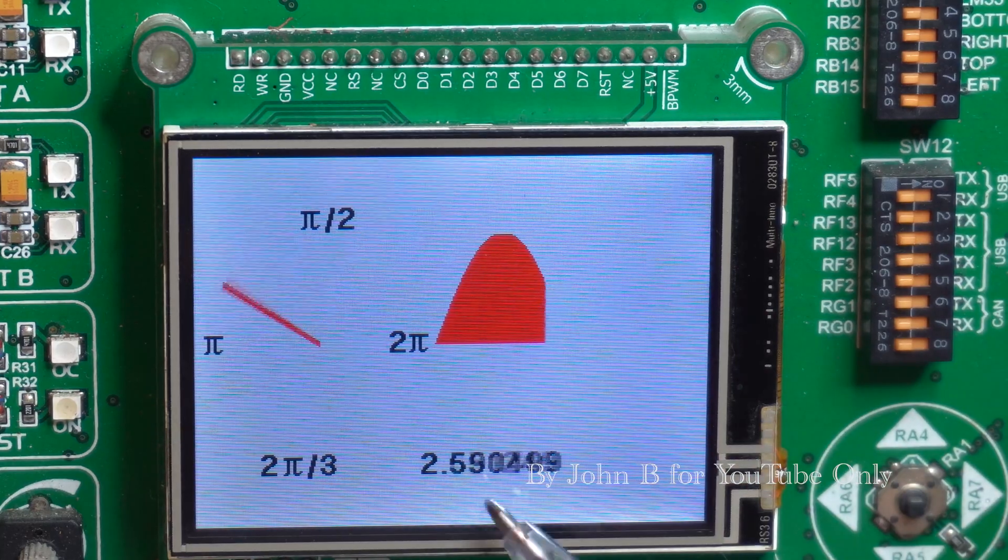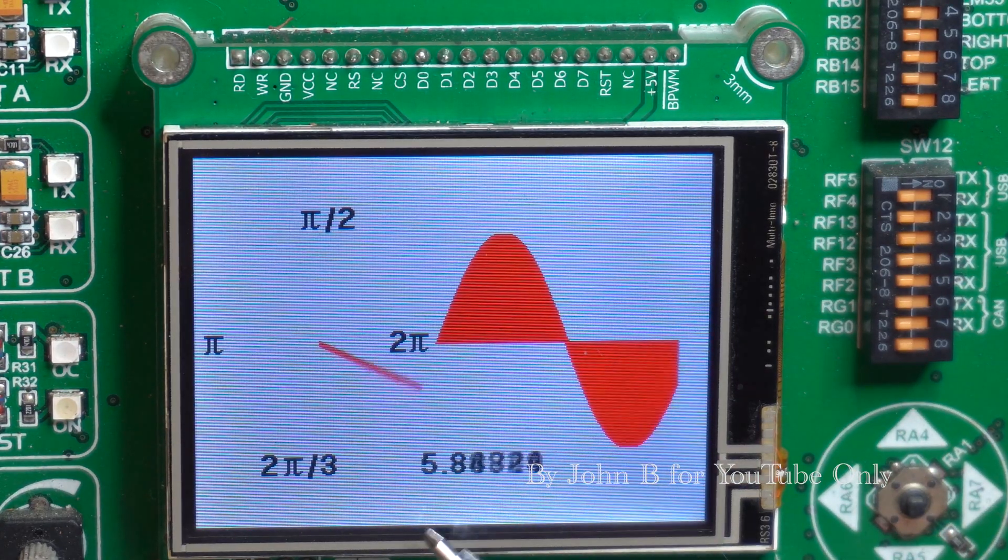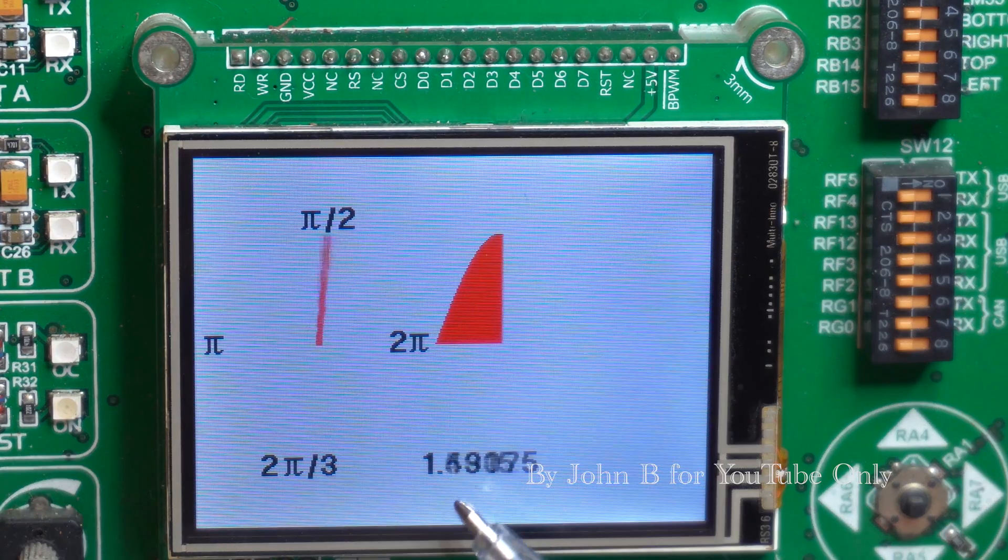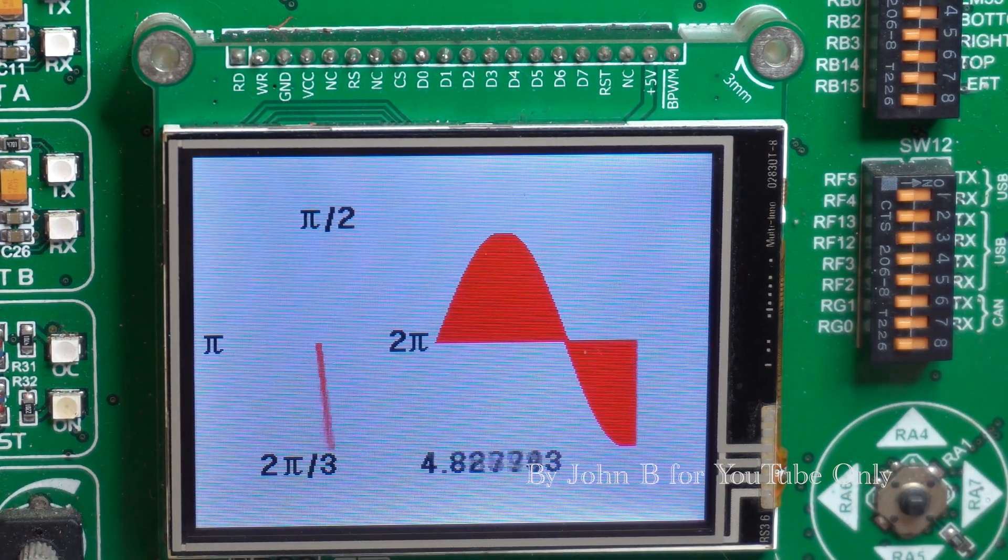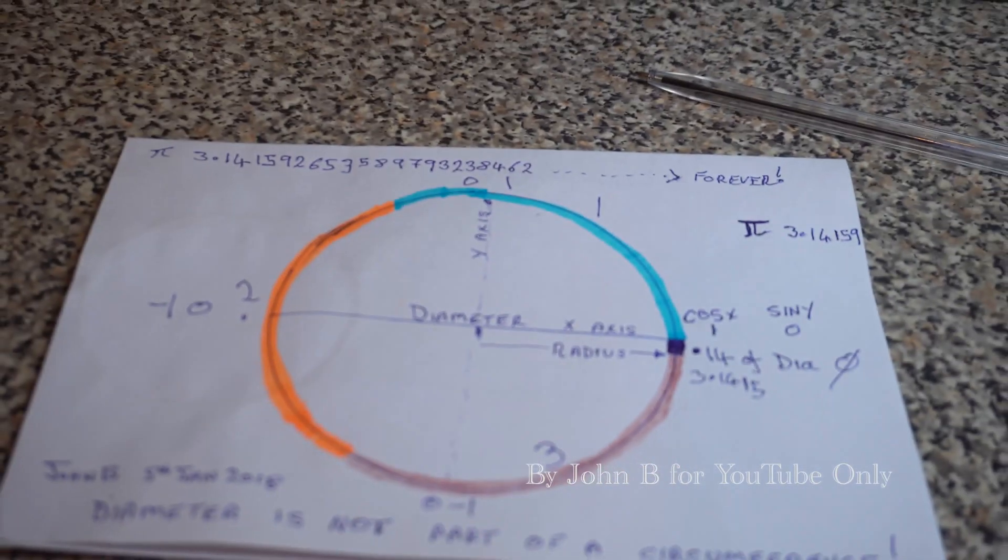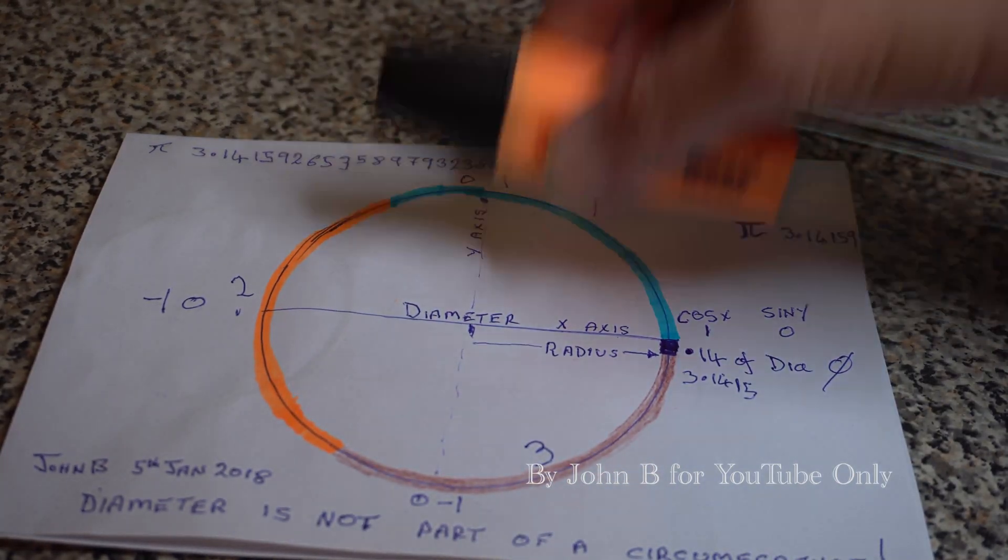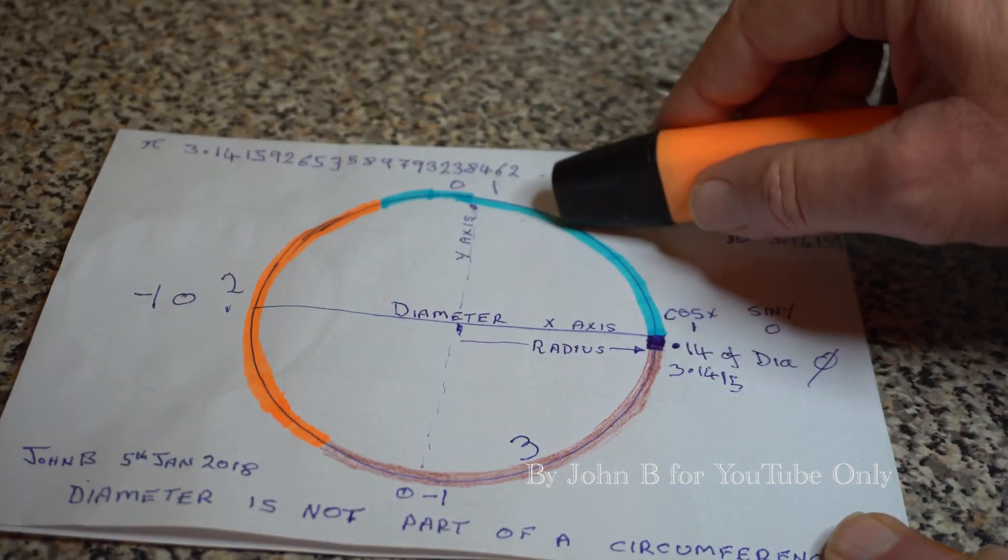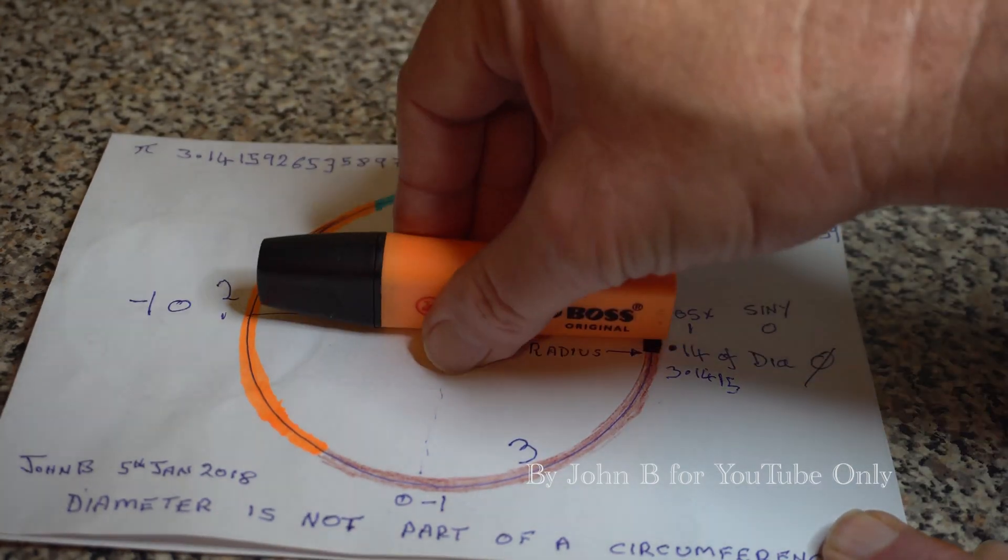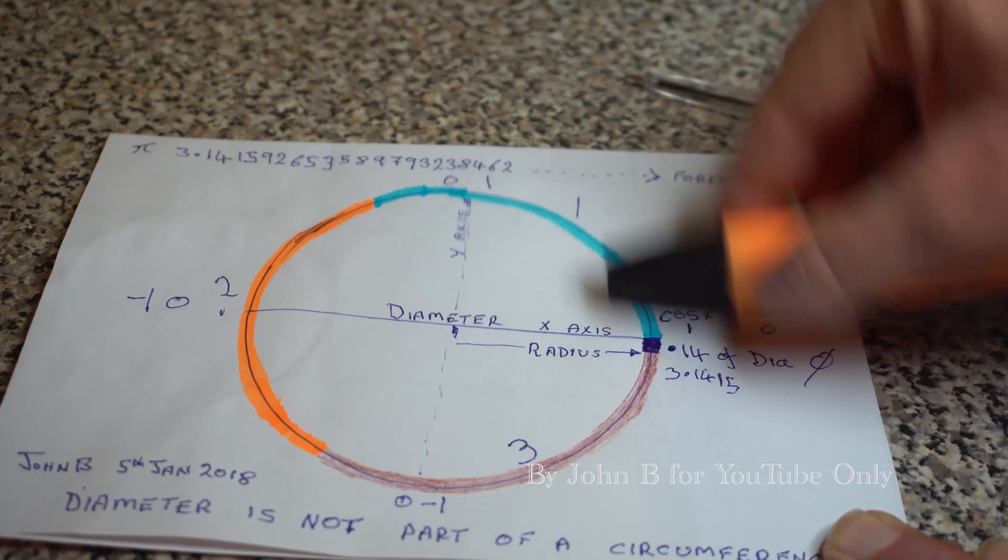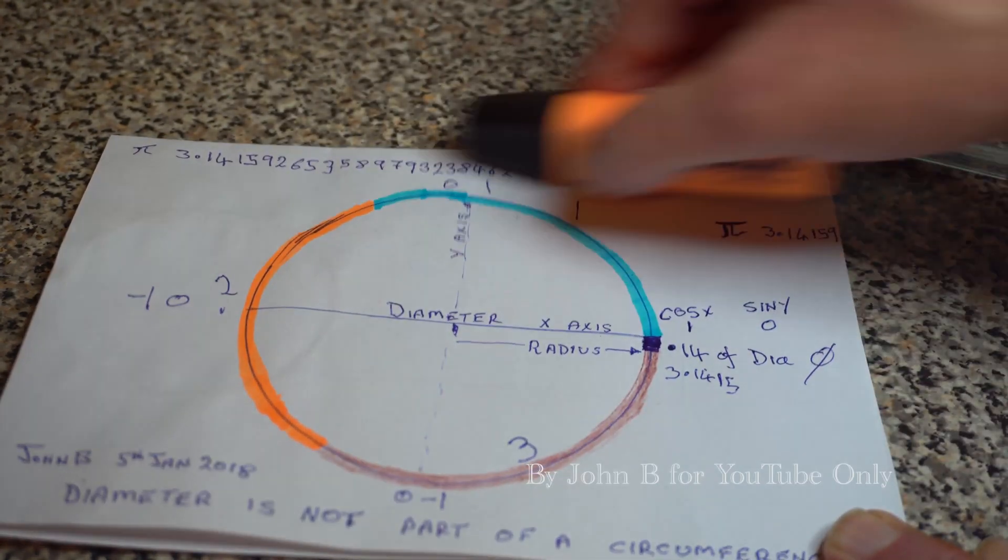With regards to this decimal number that I cannot get to 6.28, I've been chasing it for an hour. As I said earlier, this diameter makes up, this diameter cuts this circle in two, but this diameter is not part of the circle. It does not make up the circumference.